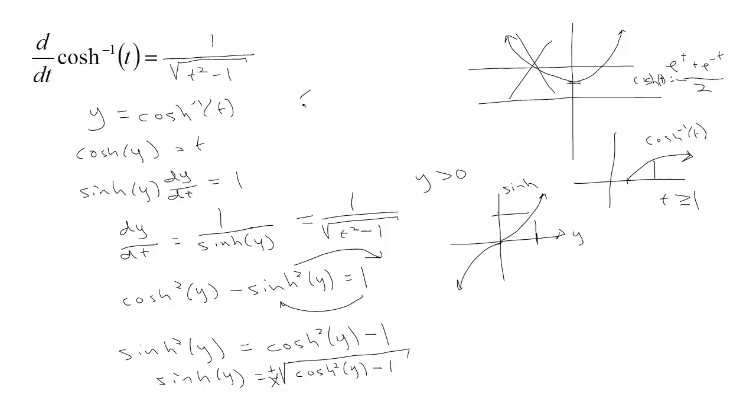So, we get another derivative for one of these hyperbolics. Now, this is handy. If someone asked you about this integral, 1 over the square root of t squared minus 1 dt, well, you'd look at that and you'd say, oh wow, if it was only 1 minus t squared, that would be an arc sine or an arc cosine. But it's t squared minus 1. It's the other way around.